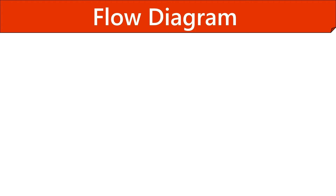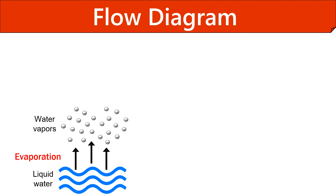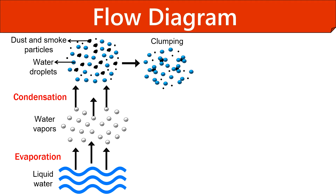We will end this video by taking a quick summary on the cloud formation process. First, liquid water evaporates into the air as water vapours. Then these water vapours reach a point where the surrounding air cools below its dew point and condenses into water droplets. After that, the water droplets clump with the dust and smoke particles present in the atmosphere and form tiny cloud droplets.